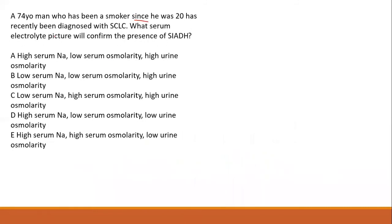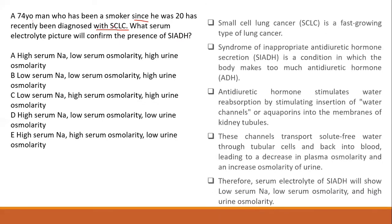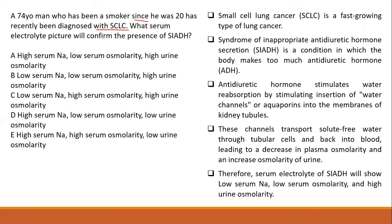We have a 74-year-old man who has been a smoker since he was 20 and has recently been diagnosed with SCLC. The question asks what serum picture will confirm the presence of SIADH — that is syndrome of inappropriate ADH, meaning antidiuretic hormone. This person has developed small cell lung cancer.